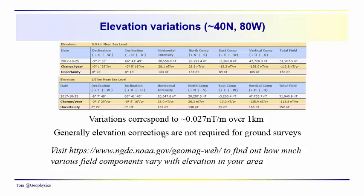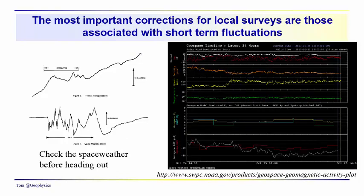Probably the most important corrections you need to make are those associated with short-term fluctuations in the magnetic field caused by geoelectric currents from the bombardment of the Earth by the solar wind. Even during a quiet day you can have ten-gamma fluctuations over a fairly short period of time. During a magnetic storm you'll see some fairly rapid variations in magnetic field intensity, which will make it very difficult to correct your data and remove something that's varying that rapidly.